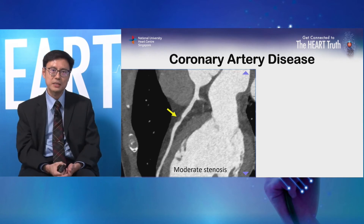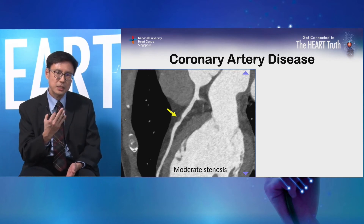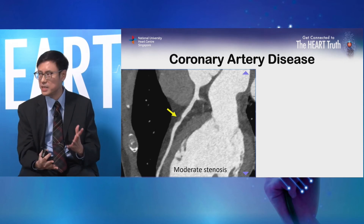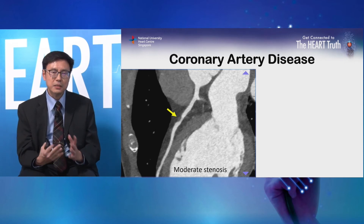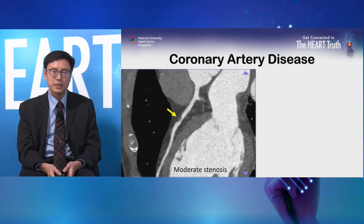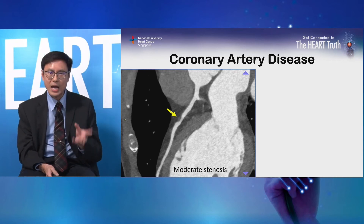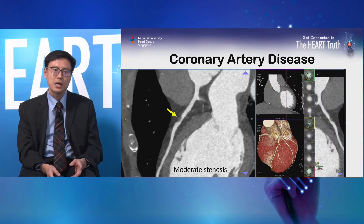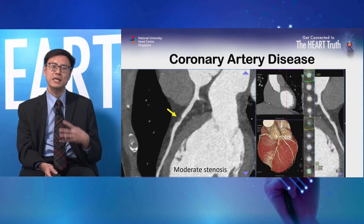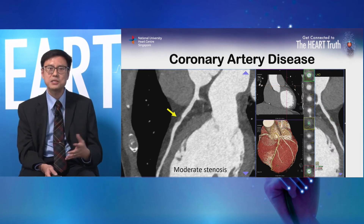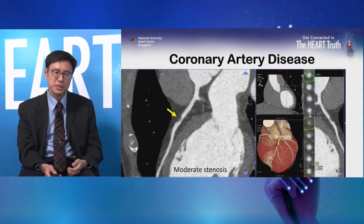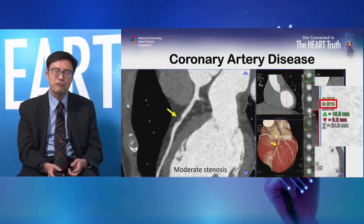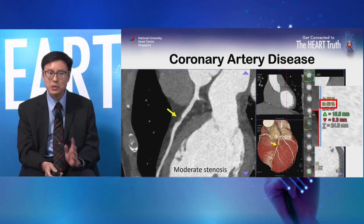Visually, the narrowing in that segment looks to be about 50%. Narrowing in medical terms is known as stenosis, so we would call this moderate stenosis. We don't always rely on visual estimation — we have computer software that can calculate the amount of stenosis. In this particular patient, the computer gave a value of 52%, which is quite close to our visual estimation.